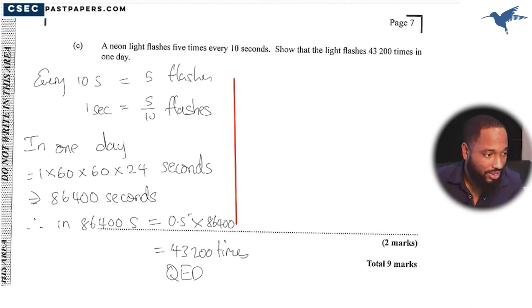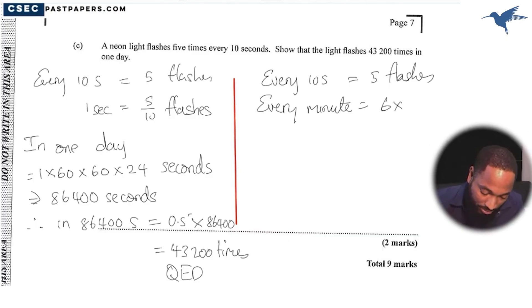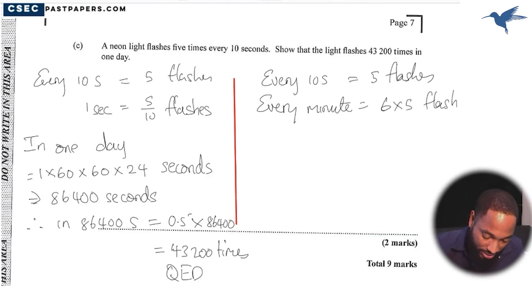It is proven, right? That's what we write for it is proven. Or another way we can do this: should a neon light flash 43,200 times in one day? Well, every 10 seconds we have five flashes. Every minute we can expect, well there are 10 seconds, so how many times 10 seconds fit into a minute? Six times. So we should expect six times five flashes, 30 flashes. And how many minutes in a day?